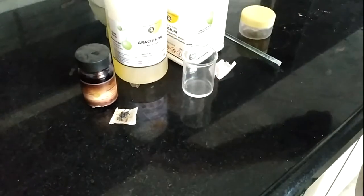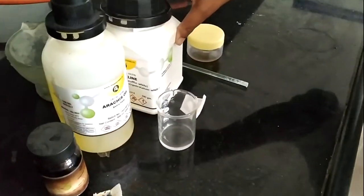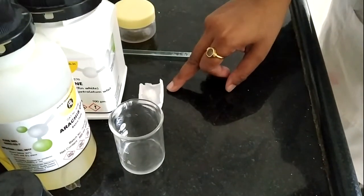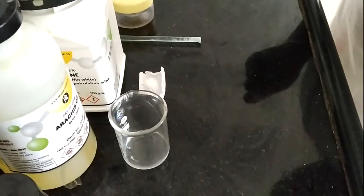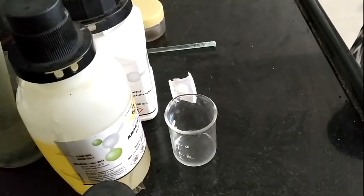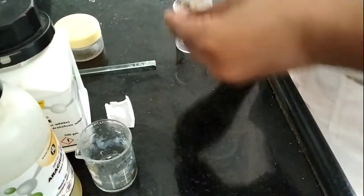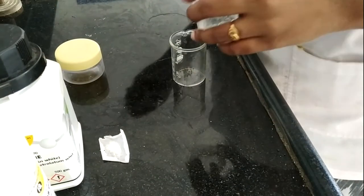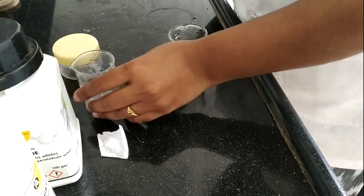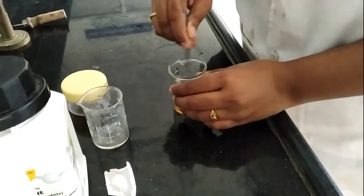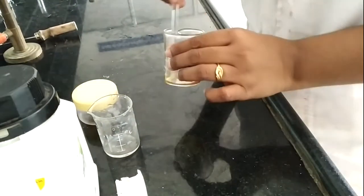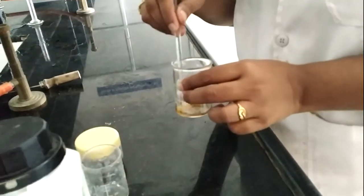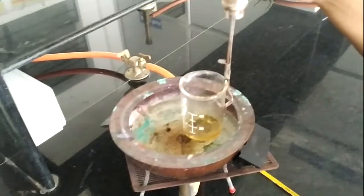We have iodine, arachis oil, and yellow soft paraffin. The arachis oil is taken into this, and this is yellow soft paraffin. Now I am going to mix all these things. I take the iodine crystals into this beaker glass, after that I add the arachis oil into it, and now I proceed for stirring it properly. After proper mixing, we have to heat it till its brown color disappears.